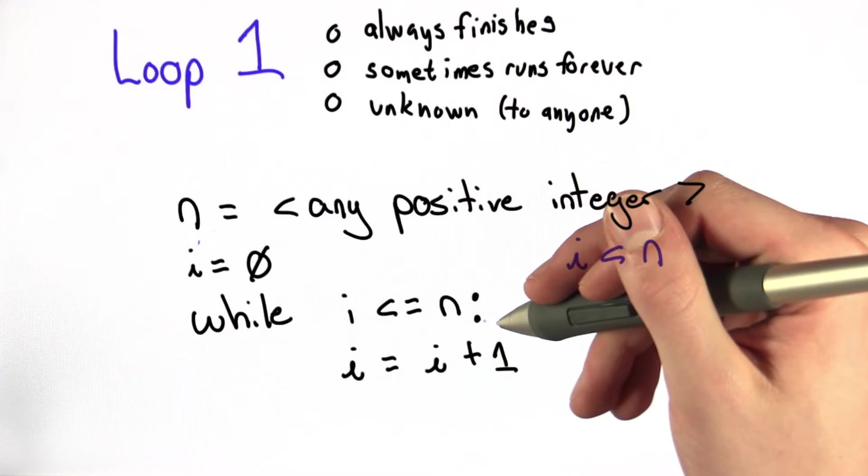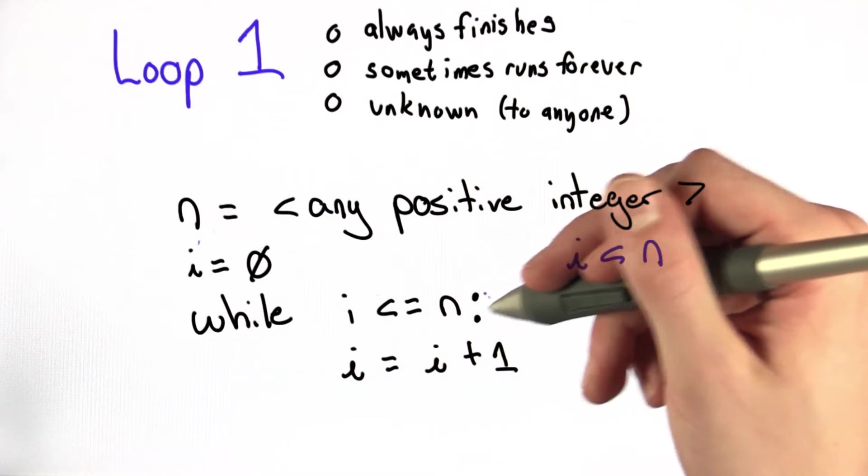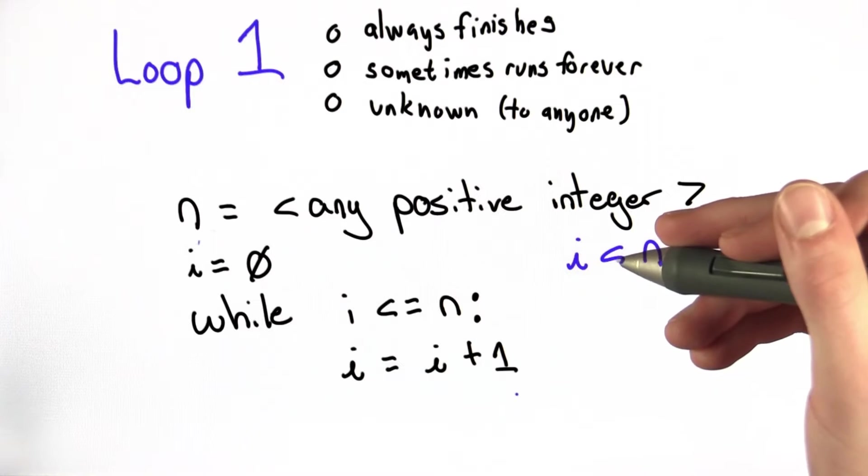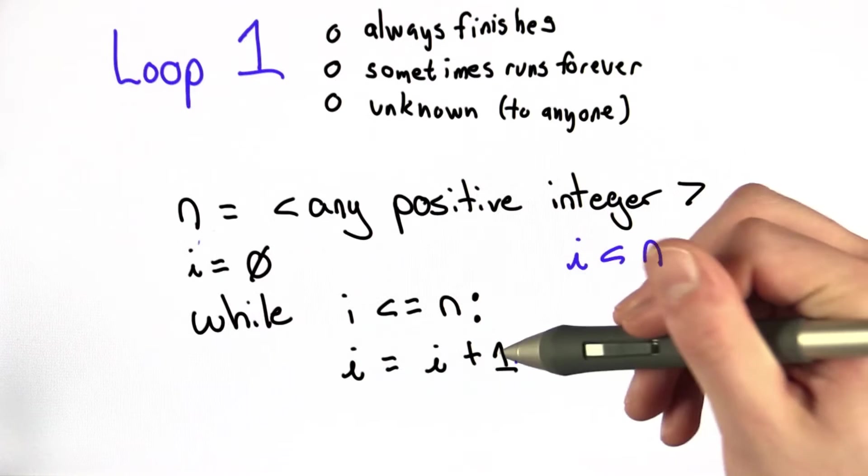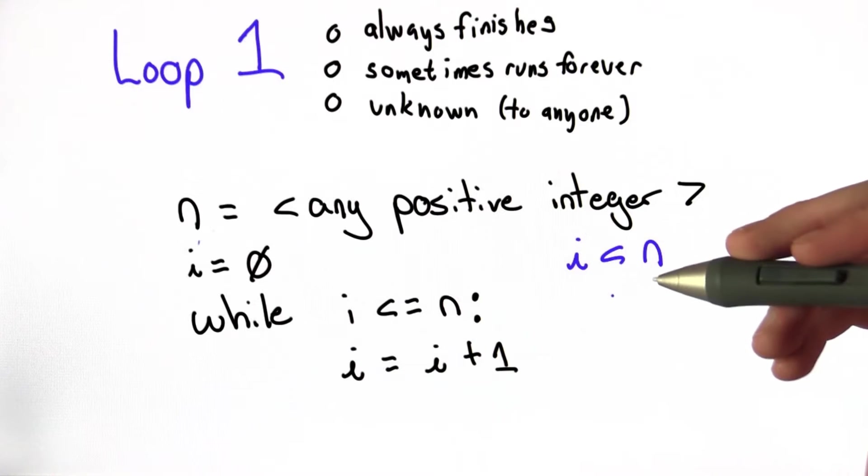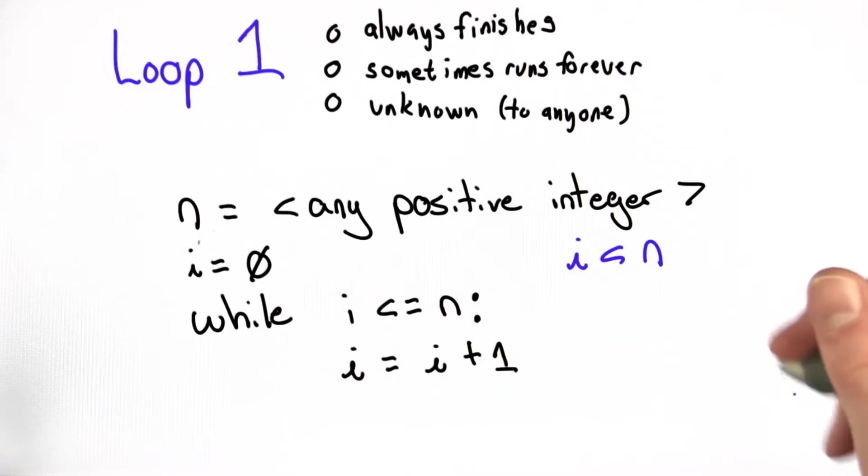This loop runs while i is less than or equal to n. Every iteration, i increases by 1. We know intuitively that eventually i will become greater than n because n is fixed. So we can say definitively that this loop always finishes.